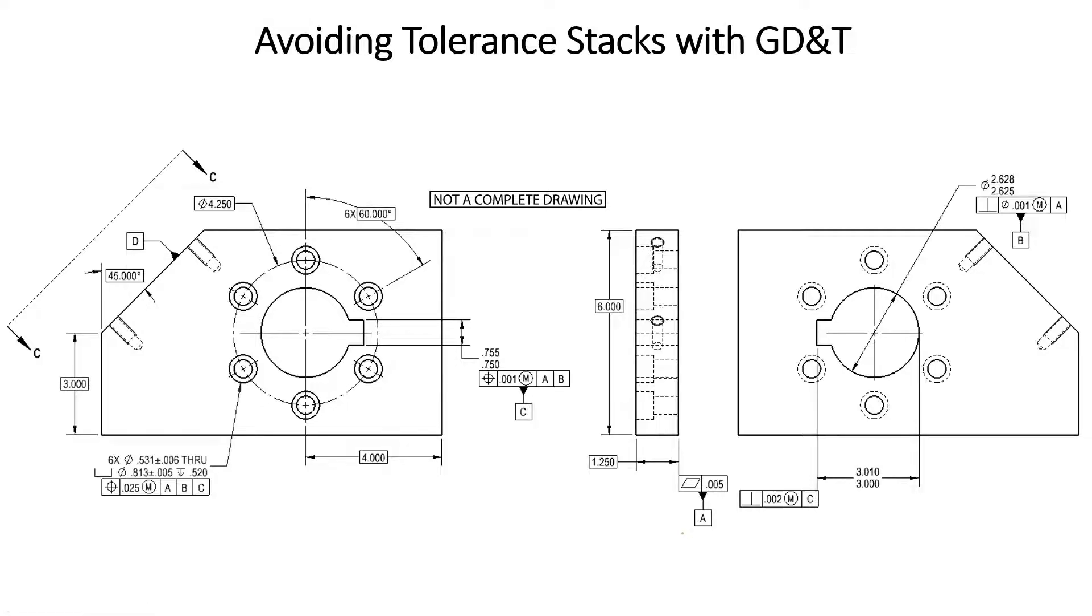We see first here that datum feature A is being controlled with flatness, and that's this back surface here. Next, we have datum feature B being controlled perpendicular back to datum A, with a perpendicularity tolerance of one thousandths. And lastly, we have datum C, which is going to be the midplane of this keyway, the position back to datum features A and datum feature B.